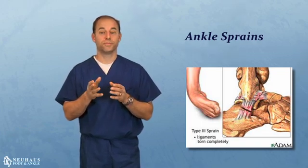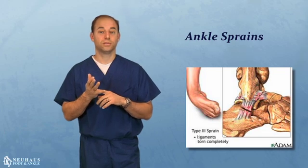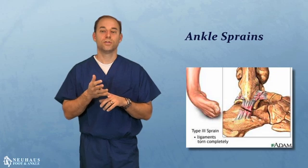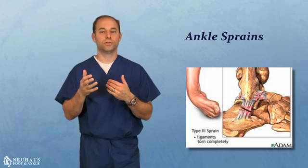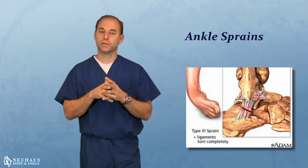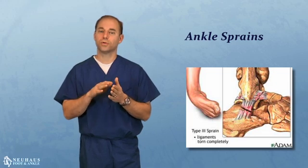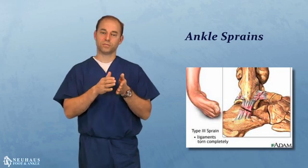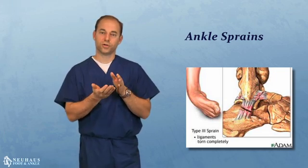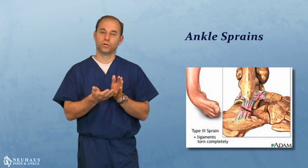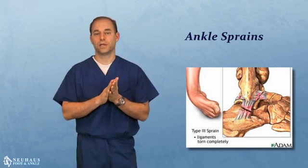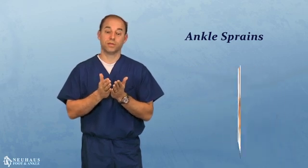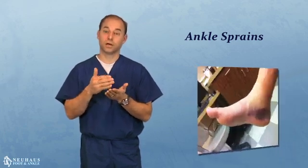In a typical ankle sprain, you're going to tear one of the two ligaments, the ATF or the CF. Those ligaments are more prone to it because they're on the outside of the foot. Most injuries occur with an inversion motion where your big toe comes up, the outside of your foot goes in, and you roll your ankle to the outside and fall. That's because those ligaments are a little bit weaker.